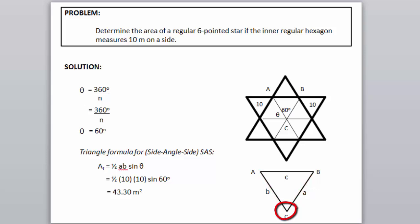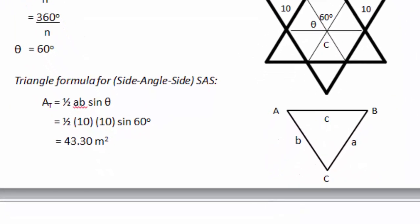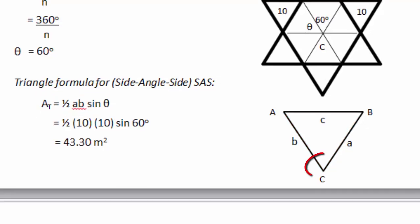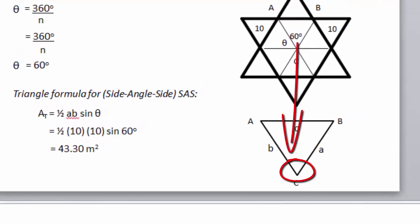We have the formula 1 half a times b times sine theta, where a is the measurement of one side of the triangle, and b is the other measurement of the other side of the triangle, and theta is the measurement of the included angle.